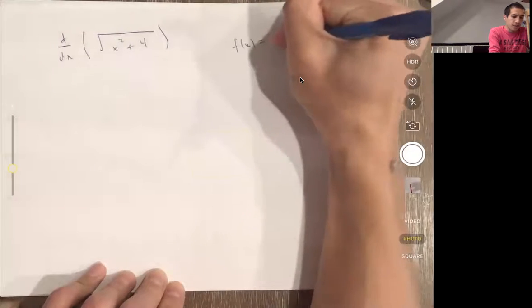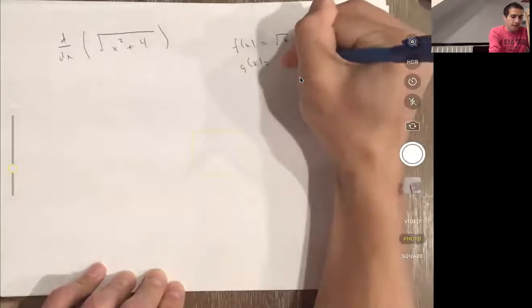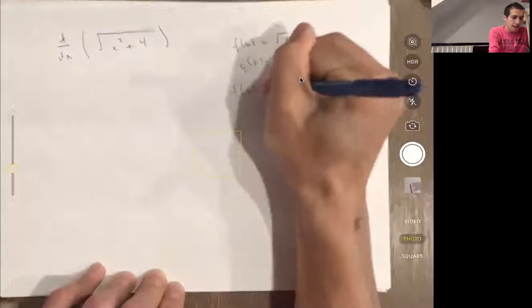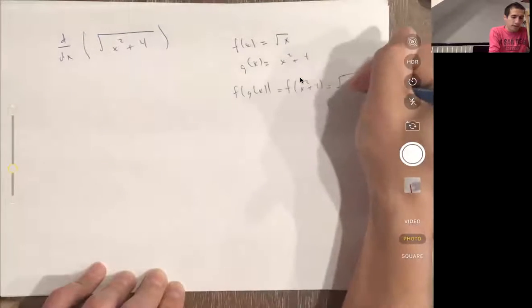So in this, I'll use f(x) as the square root of x, and I'll use g(x) = x² + 4. Now f(g(x)) is f of x² + 4, which is the square root of x² + 4.